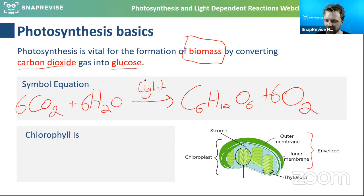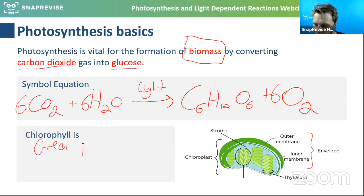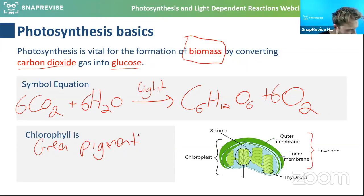Chlorophyll is what makes plants green. Chlorophyll is a pigment inside of a plant, inside of something called a photosystem, and it is green.